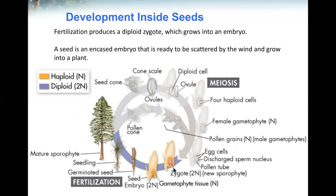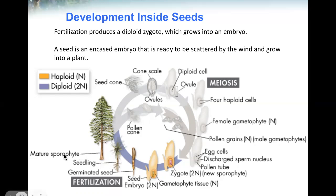The new sporophyte — the zygote, diploid — consists of gametophyte tissue plus the seed embryo. It becomes a germinated seed and, when triggered by the right conditions, grows into a seedling and then a mature sporophyte — a tree.